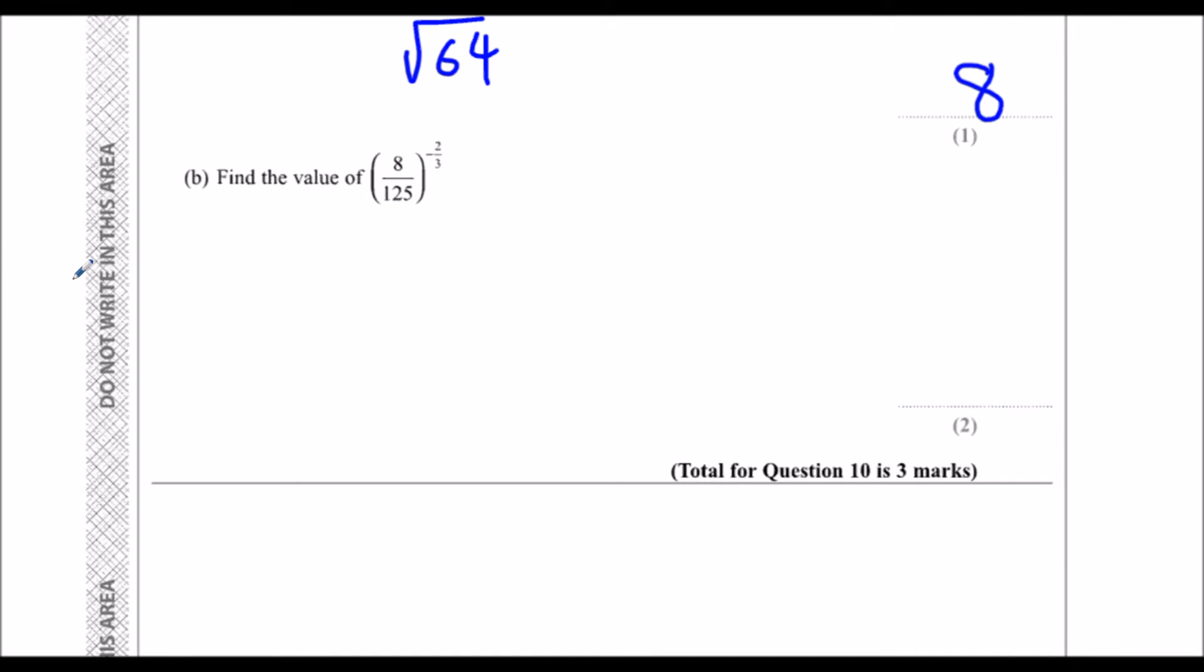Find the value of 8 over 125 to the power of minus 2 thirds. There are three things we've got to do here. The third, that's a cube root.